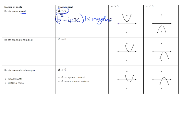As a graph, what that means is your graph will not cut through the x-axis. If your a value is positive and your graph smiles, it will lie above the x-axis. If your a value is negative and your graph frowns, the graph will lie below the x-axis. That's what it looks like if you draw the graph of a quadratic that has non-real roots.